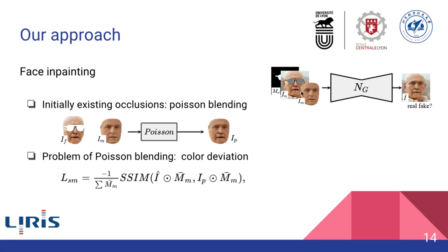For the imprinting module, it's a stack of residual blocks following the classic encoder-decoder structure. For the occlusions already present in the input face image, we don't have ground truth for this part. So we use Poisson blending to blend the real face texture with the corresponding 3D reconstruction result. To deal with the color deviation problem, we use the structural similarity loss instead of pixel-wise loss.